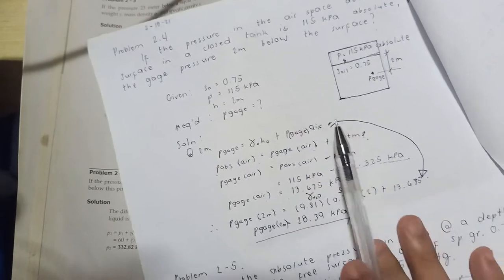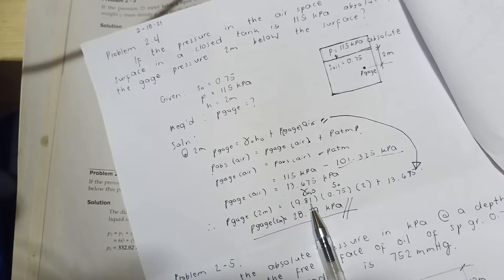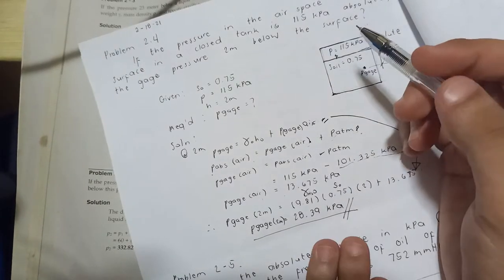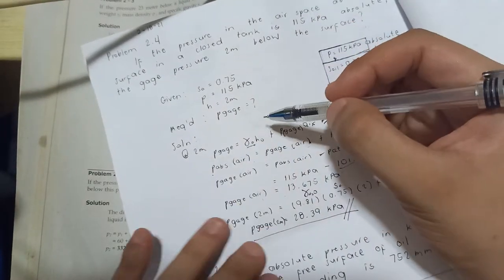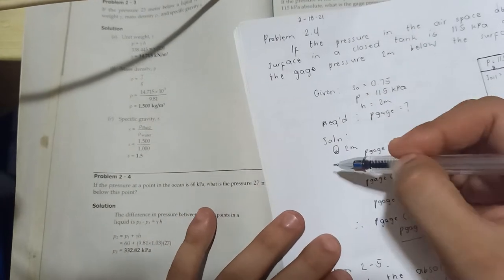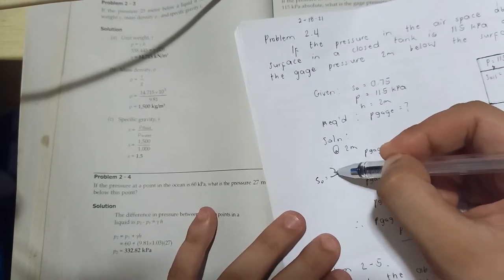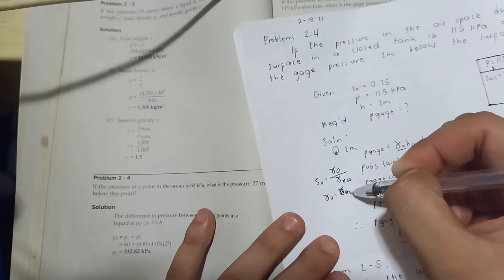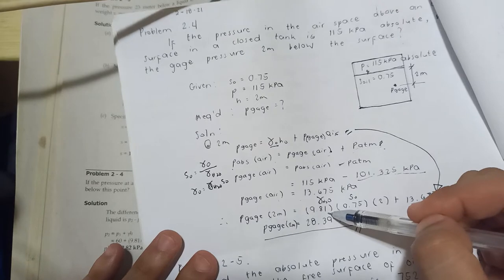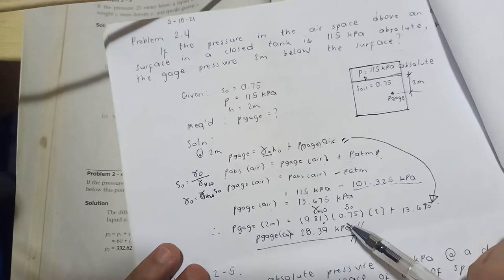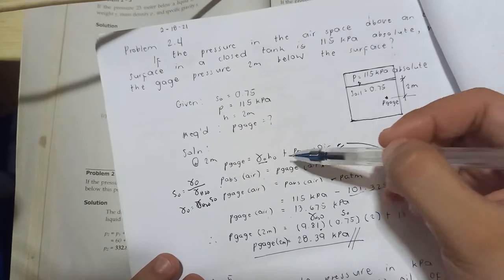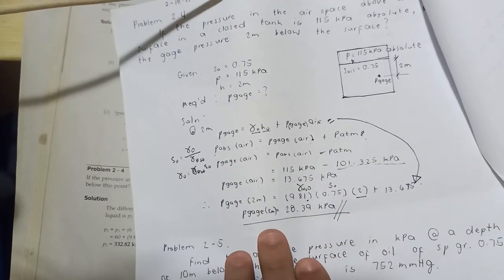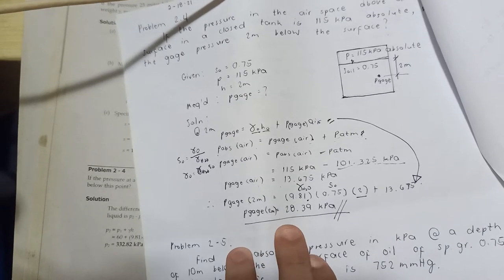Substituting values: using 9.81 as unit weight of water and specific gravity 0.75. The specific gravity of oil equals unit weight of oil divided by unit weight of water. With the oil column of 2 meters, we get 14.715 plus 13.675, giving a gauge pressure of 28.39 kilopascal at 2 meters.